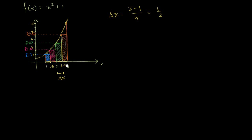Now, what is the total approximate area using the sum of these rectangles? Clearly this isn't going to be a perfect approximation — I'm giving up some area here. But this is just an approximation, and maybe if I had many more rectangles it would be better. So let's figure out the area of each rectangle.